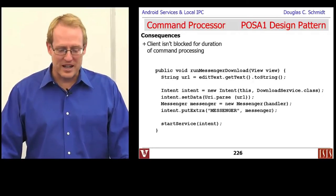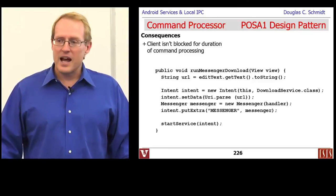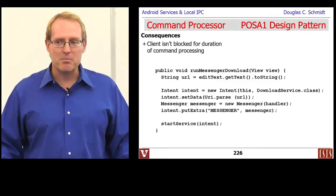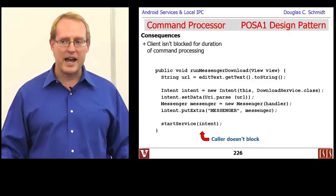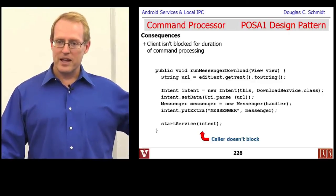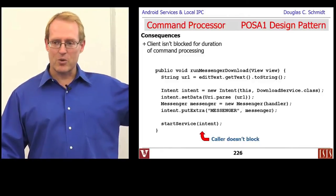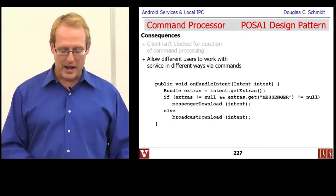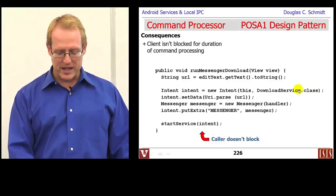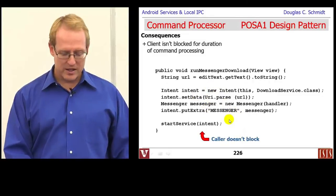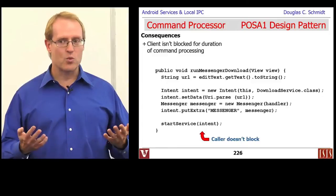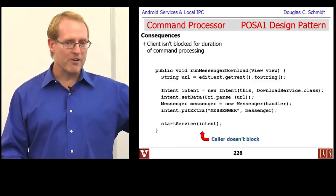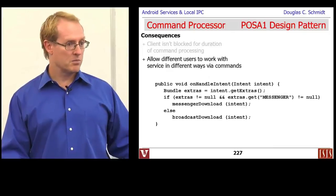There are a lot of different consequences of using this particular pattern. One of the good things is that the client is not blocked for a long duration of time. Looking at a little snippet of code: we create an intent targeting the download class, set the data, create a messenger and stick that in as an extra, then call startService. The call to startService does not block the client—it's not going to wait for that thing to start. It's going to fire it over there and go on its way to be driven by further callbacks.